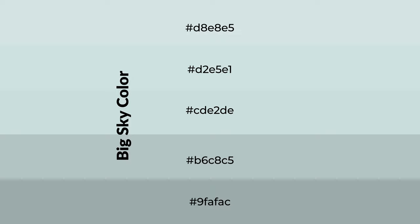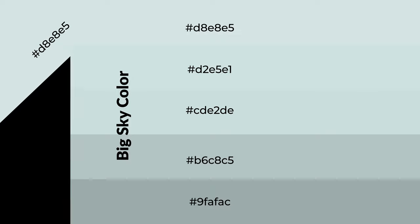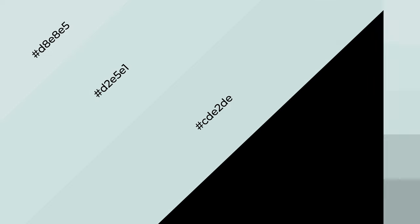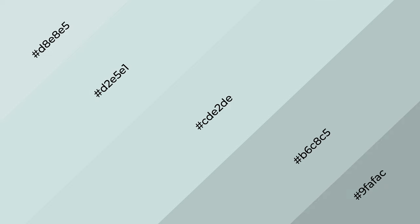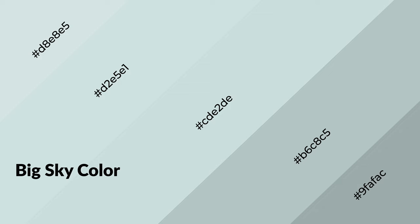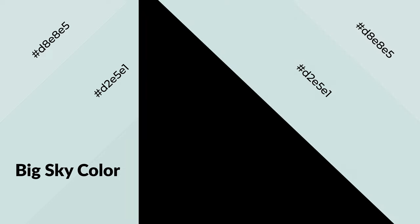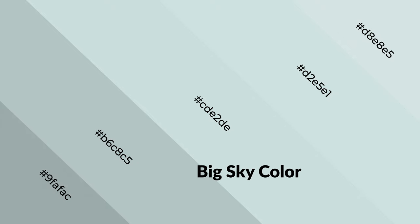To generate shades of a color, we add black to the color. Shades are used in patterns, 3D effects, and layers — they create depth and drama. Big sky is a cool color and it emits calming, serene, soothing, refreshing, spacious, unwinding, peaceful, and relaxed emotions.